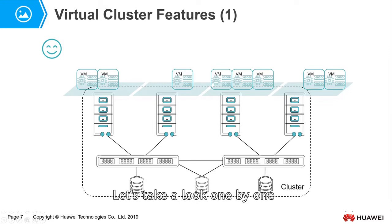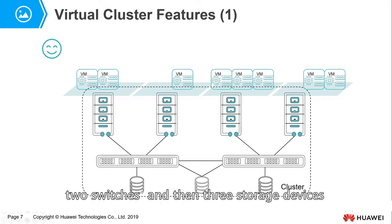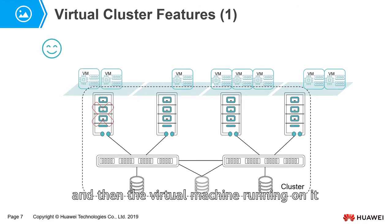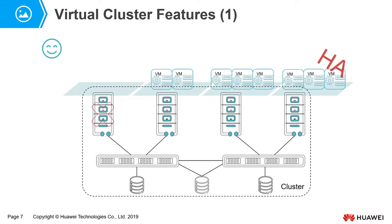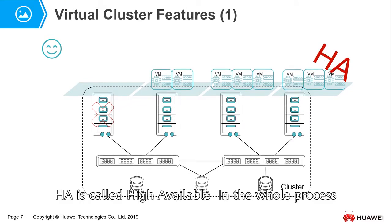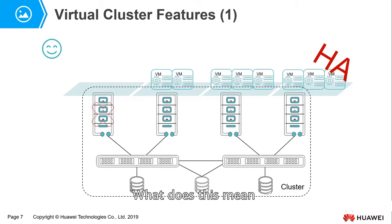Let's take a look one by one. First, let's look at this diagram. In this cluster, we now have four servers, two switches, and three storage devices. If one of the servers fails, it can't start or cannot run. The virtual machine running on it automatically migrates to other servers that are running properly. This function is called HA. HA stands for High Available. In the whole process, look at the icon in the upper left corner — this icon has not changed.